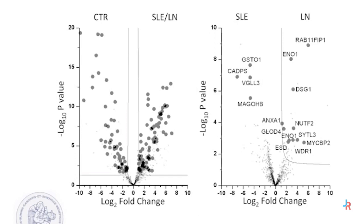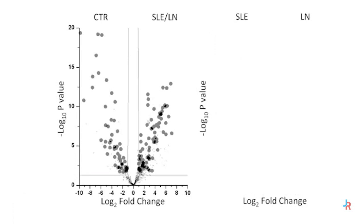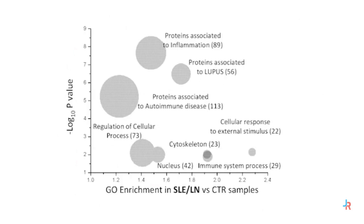These volcano plots show proteins that are high in lupus patients and other proteins that are high in control cells, indicating that there is quite a difference in composition. Another important aspect related to NET proteins is that in many cases they are represented by proteins associated with the inflammasome, proteins associated with lupus, or associated with other autoimmune diseases. It is very important to note that the differential expression is related to the autoimmune process.